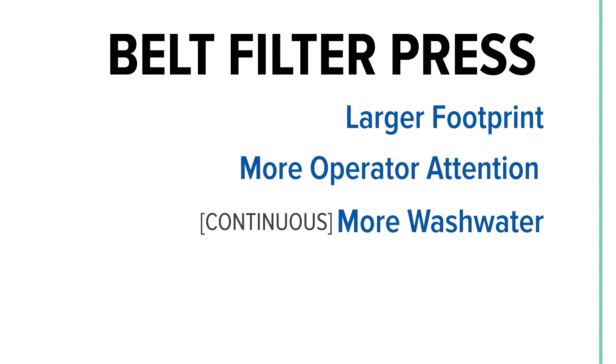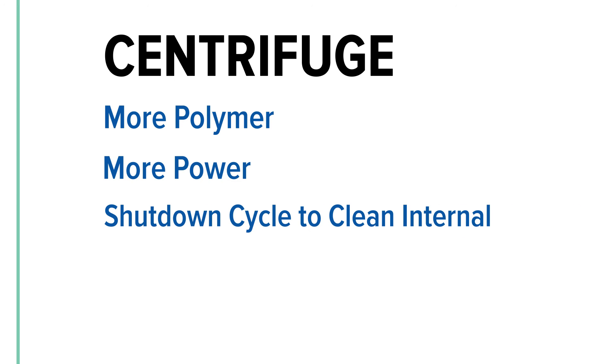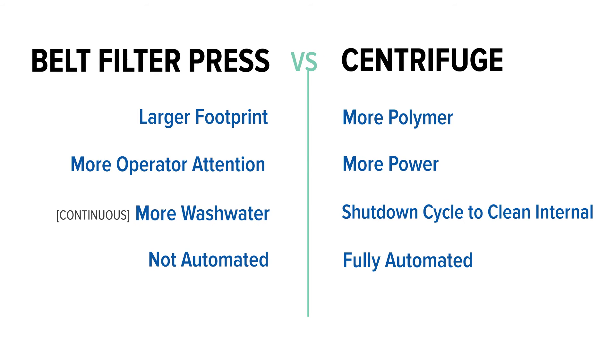The belt press uses a lot of wash water, and the wash water needs to be continuous. For the centrifuge, wash water is only required during the shutdown cycle to clean the internal components. The centrifuge is fully automated, whereas the belt press is not.